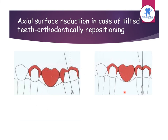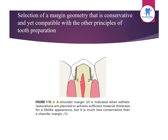Regarding selection of margin geometry, this picture shows the shoulder margin and chamfer margin. For aesthetic restorations requiring sufficient material thickness for a lifelike appearance, a shoulder margin is indicated but is less conservative than a chamfer margin. For metal restorations, a chamfer margin is used as it is more conservative.